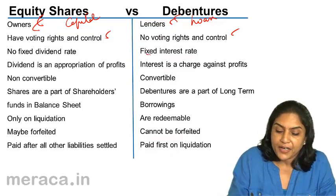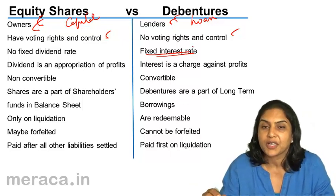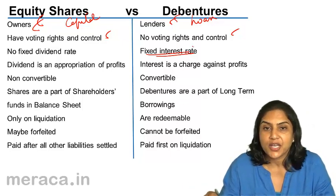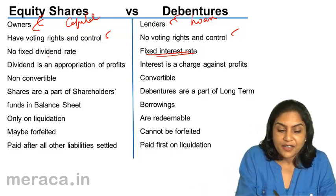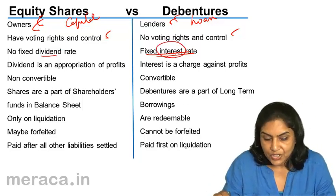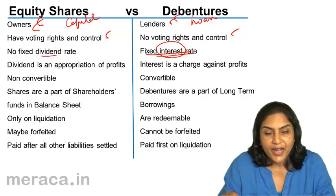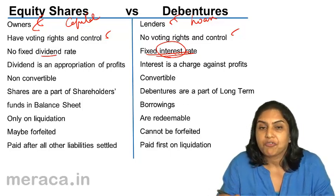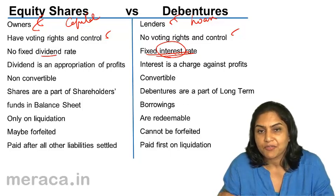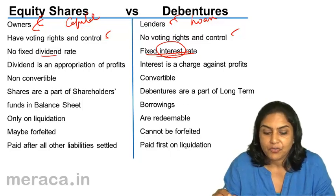Debentures are paid a fixed interest rate — maybe annually, semi-annually, half-yearly, or maybe quarterly. Equity shares may or may not be paid dividend. Dividend is the return on shares, and interest is the return on debentures. If there are enough profits, equity shareholders may get a dividend, and the rate may vary from year to year — 10%, 20%, 50%, 100%, whatever. But there is no fixed rate of dividend.